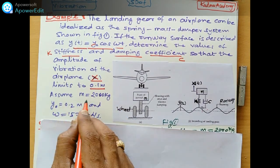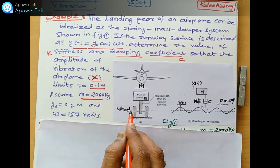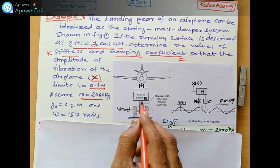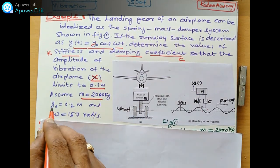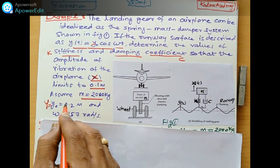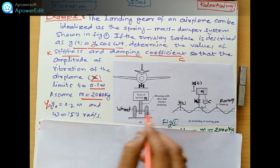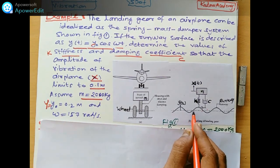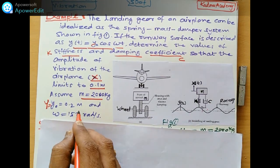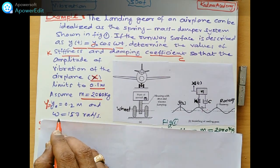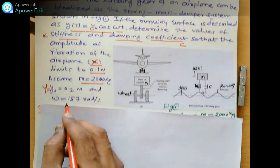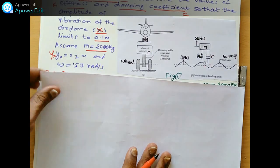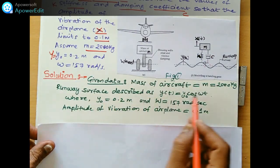Assume the mass of this aeroplane, aircraft is 2000 kg. And this y capital Y or y0, there is this amplitude for this surface, 0.2 meter. And frequency is omega 157 radians per second. So what is the solution? This given data is to us.